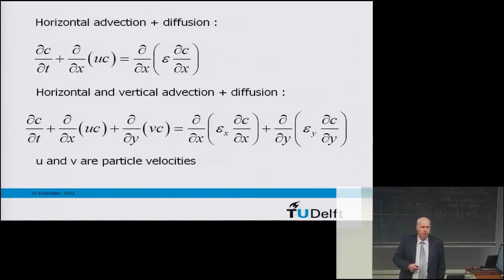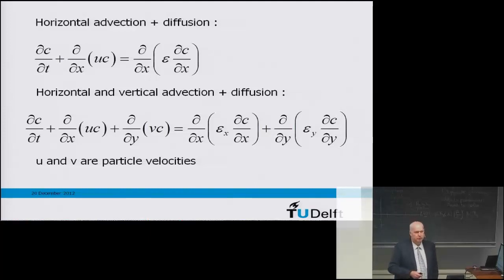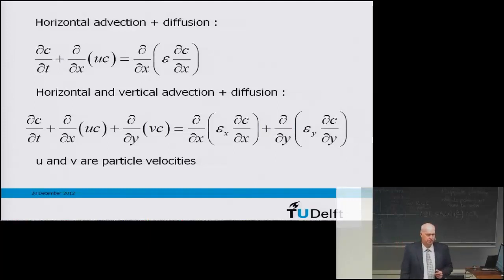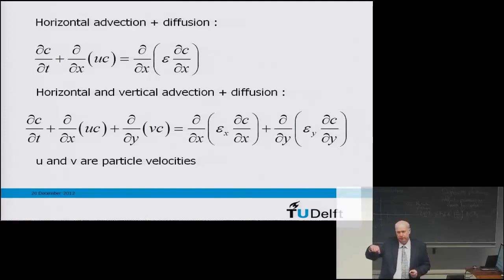Importantly, we're looking at the concentration of particles, so u and v in this equation are the velocities of the particles, not the fluid. We look at the transport equation of the volume of particles, so we need the particle velocity. There can be a difference between fluid velocity and particle velocity. The simplest example: drop one particle in a stagnant fluid — fluid velocity is zero but the particle has a vertical settling velocity. These two velocities are not the same.